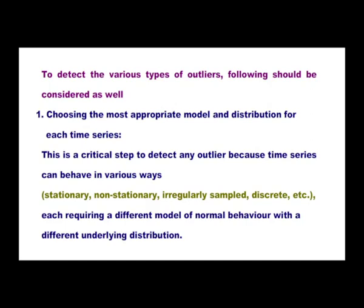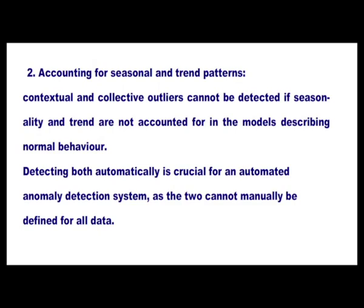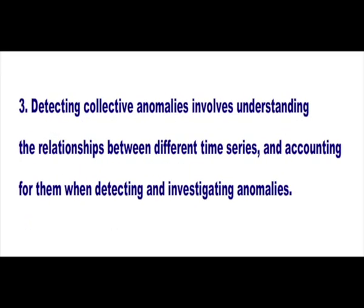To detect the various types of outliers, the following features must be considered. The first is choosing the most appropriate model and distribution for each time series. This is a critical step because time series can behave in various ways — stationary, non-stationary, irregularly sampled, discrete, and so on — each requiring a different model of normal behavior with a different underlying distribution. The second feature is accounting for seasonal and trend patterns. Contextual and collective outliers cannot be detected if seasonality and trend are not accounted for in the models. The third feature involves detecting collective anomalies by understanding the relationships between different time series and accounting for them when detecting and investigating anomalies.